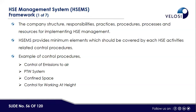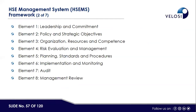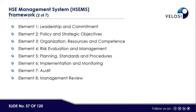HSEMS has different elements: Element 1 — Leadership and Commitment (visibility, monitor, guide culture, proactive target setting, code of conduct); Element 2 — Policy and Strategic Objective (HSE policy, strategic objectives, dissemination); Element 3 — Organization Resources and Competence (roles, responsibilities, resources, minimum competency levels); Element 4 — Risk Evaluation and Management; Element 5 — Planning Standard and Procedure; Element 6 — Implementation and Monitoring; Element 7 — Audit; Element 8 — Management Review.